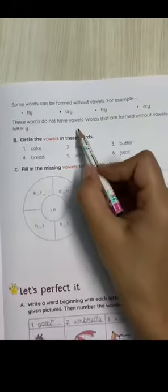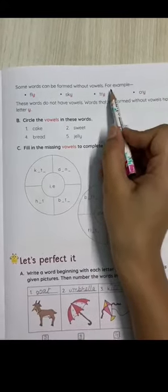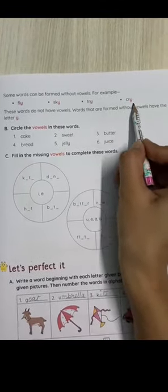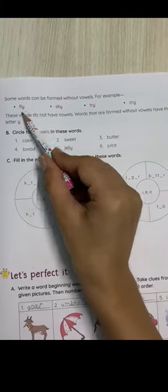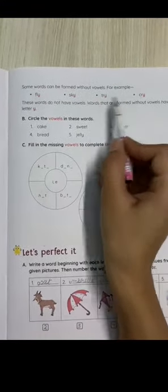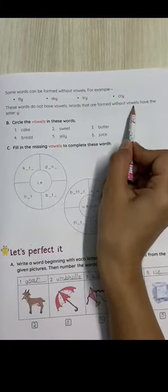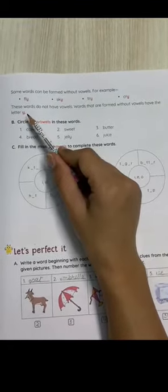Some words can be formed without vowels, for example fly, sky, try, and cry. In these spellings, there are no vowels. Words that are formed without vowels have the letter Y.